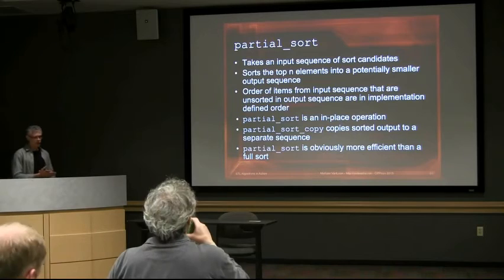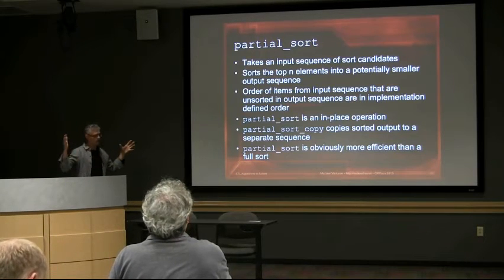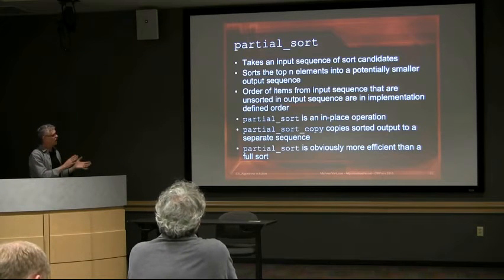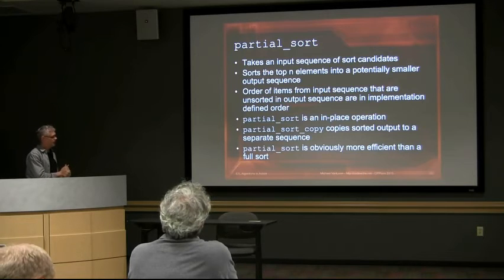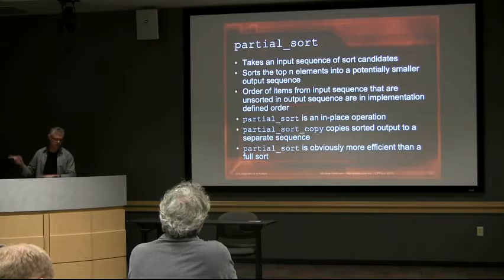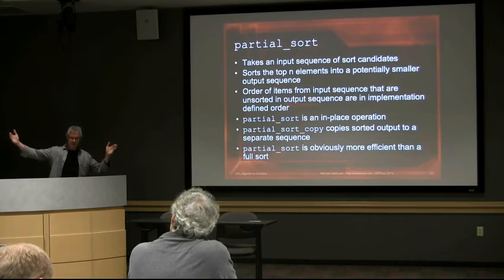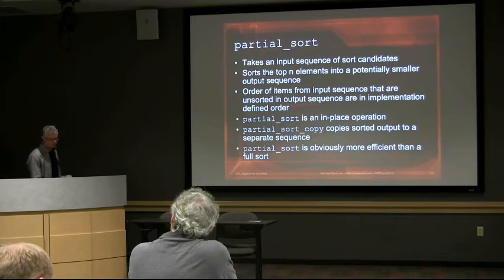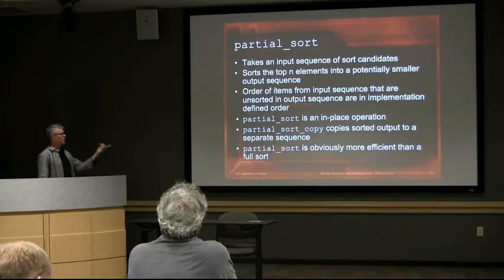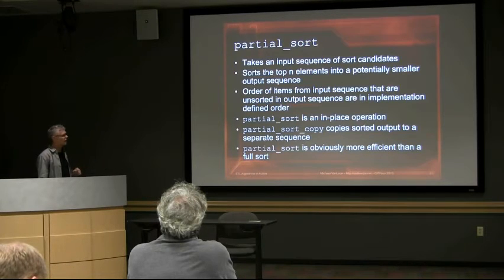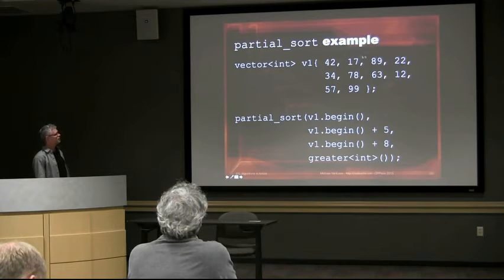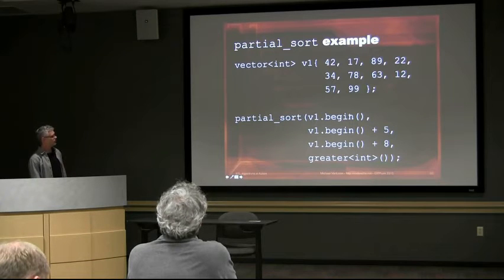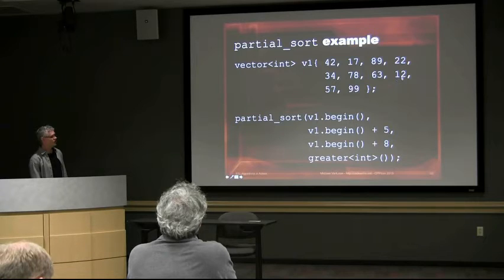Partial_sort takes an input sequence of sort candidates that may be larger than the number of elements you actually want sorted. The order of unsorted items in the output is implementation-defined. It's an in-place operation; partial_sort_copy puts it into a separate container. It's more efficient than a full sort because you're only sorting some of the data. For example, with some numbers, we do a partial_sort from beginning to beginning-plus-five as what we want sorted, with beginning to beginning-plus-eight as the input range — meaning the last two items are omitted from the sort altogether.